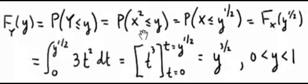And now in this case y is equal to x squared, so we replace the y with x squared. And now the probability that x squared is less than or equal to y.